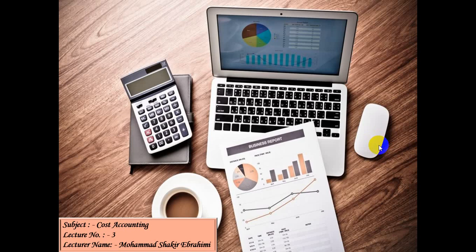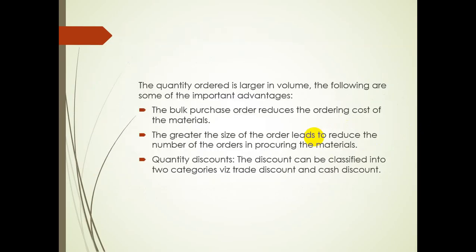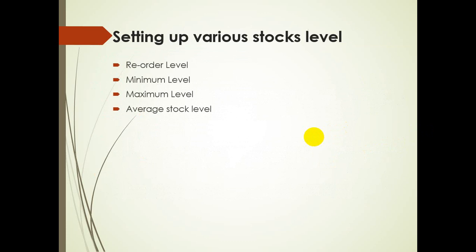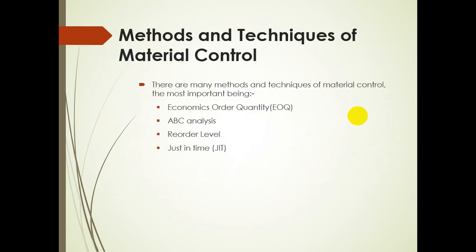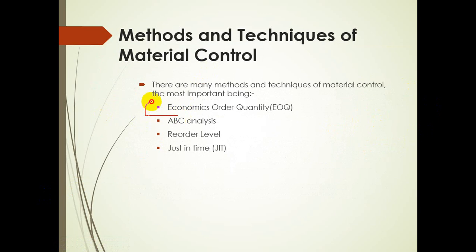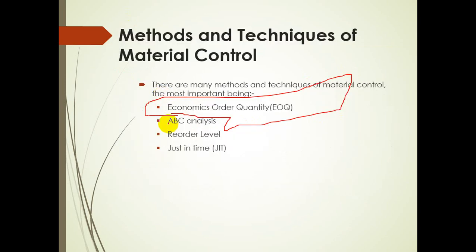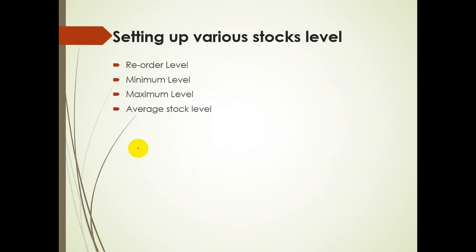Welcome to the third session of Cost Accounting. Today I will be discussing the reorder level, ABC analysis, and Just-In-Time. In the last session we discussed economic order quantity — we solved one question on material control, covering what material control is, the methods and techniques used for it.